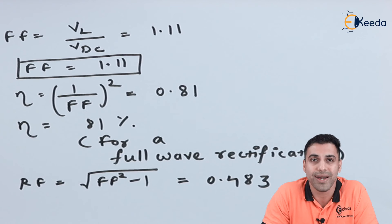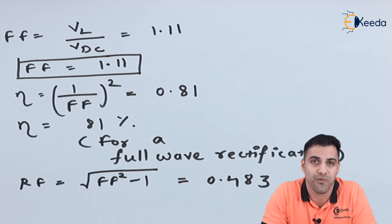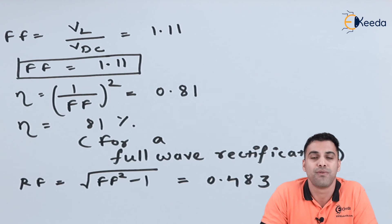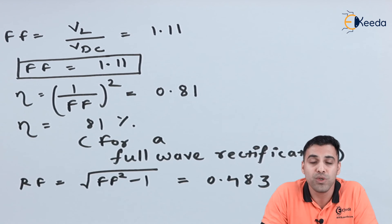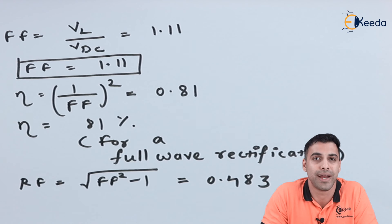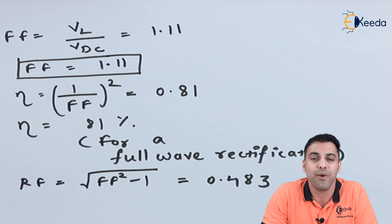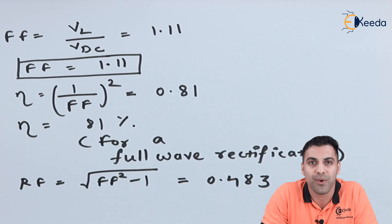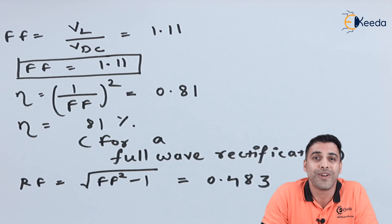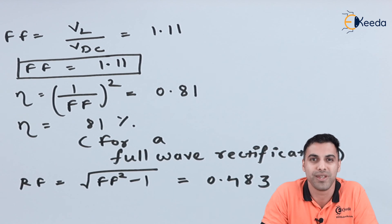We calculated all the mathematical expressions for the DC voltage, RMS value of the load voltage, DC current, RMS value of the load current, and most importantly the efficiency — which we found to be 81 percent for the full wave center tapped rectifier, compared to 40.5 percent for the half wave rectifier. We also calculated the form factor and ripple factor of the center tapped full wave rectifier with a resistive load RL. Thank you for watching this video — please subscribe to Ikeda and stay tuned.